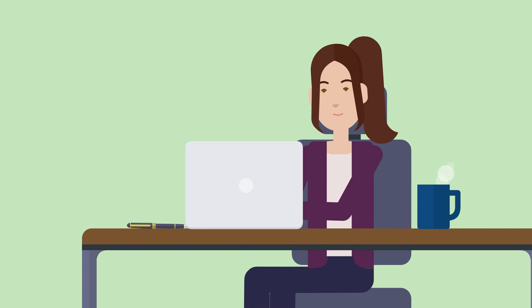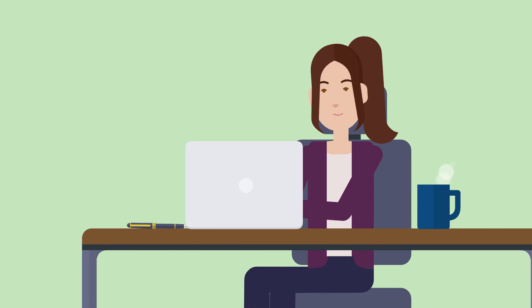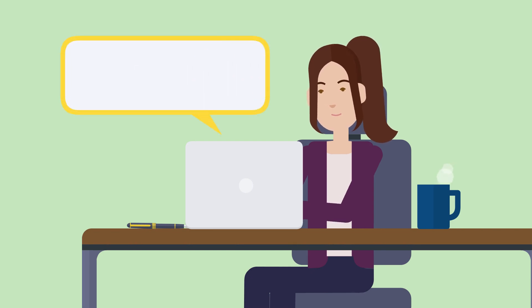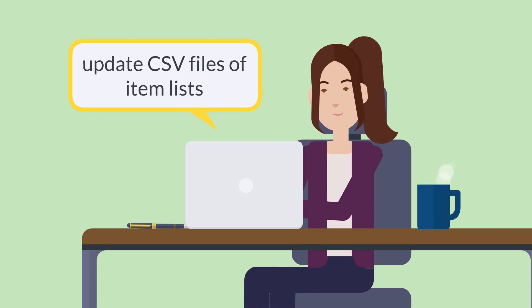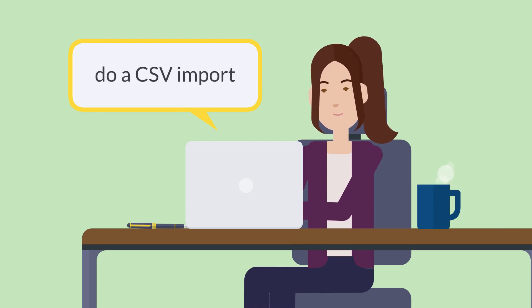Another way to update the translations for your items is to use a CSV import. To do this, you would need to update your existing CSV files of your item list to include the translations, and then do a CSV import to get all the translations into NetSuite.